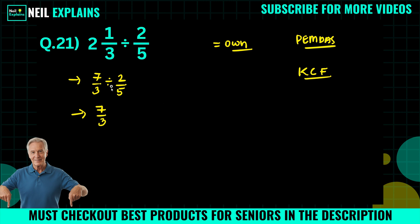Now division will be changed to multiplication, and 2/5 will become 5/2. Now simply multiply 7 times 5 and 3 times 2. You can write it like this.